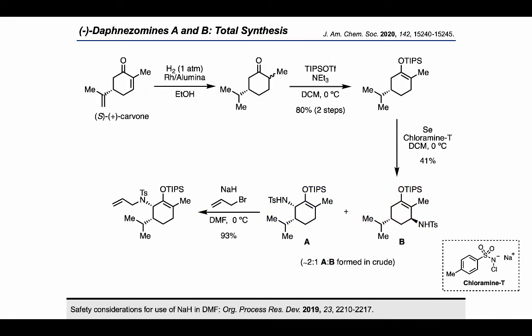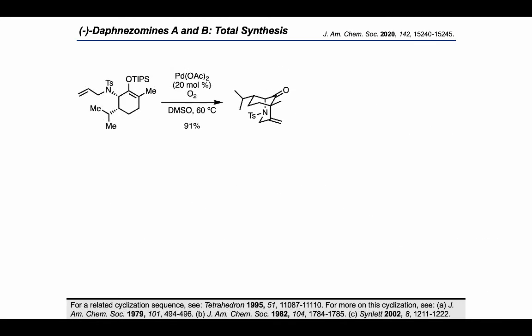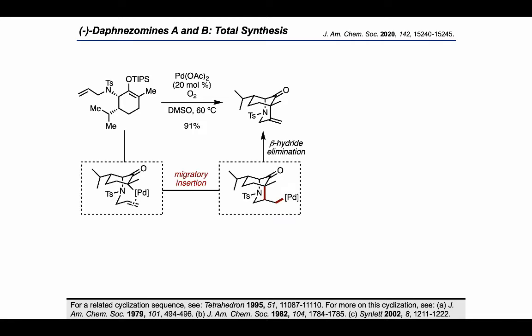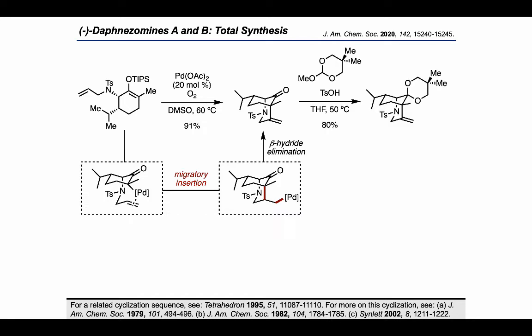Carrying on with product A, they installed an allyl group on the nitrogen using sodium hydride and allyl bromide. That allylated intermediate was then used as a substrate in a palladium-catalyzed oxidative cyclization, which provided this bicyclic product. We can understand this reaction pathway as involving migratory insertion to set up the key carbon-carbon bond, followed by beta-hydride elimination to regenerate the olefin. The authors then protected the ketone as a bulky ketal before proceeding.